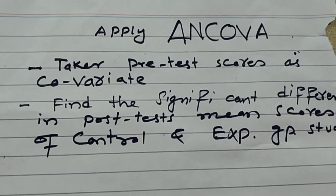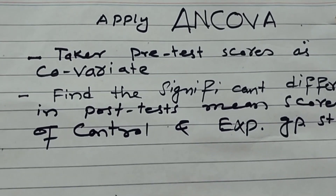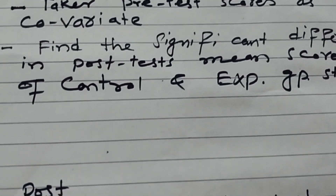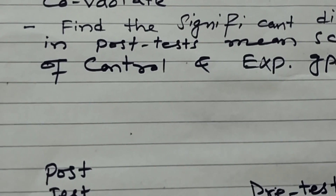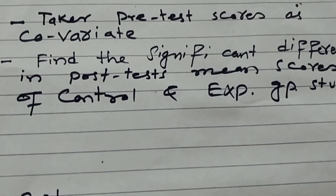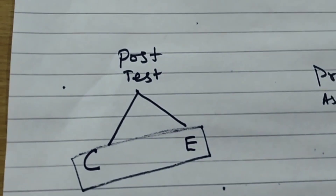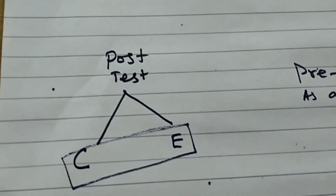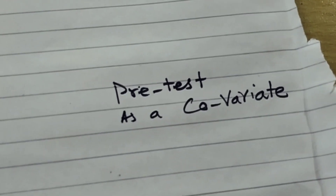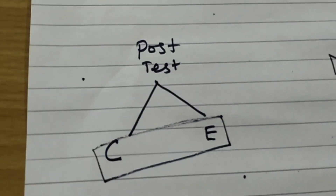When applying ANCOVA in SPSS, you will select the pre-test scores as co-variate scores. You select the variables — the post-test scores of the control group and the experimental group — for comparison of mean scores, but the pre-test effect will be minimized. The difference in post-test mean scores will be computed while the pre-test is controlled as a co-variate.